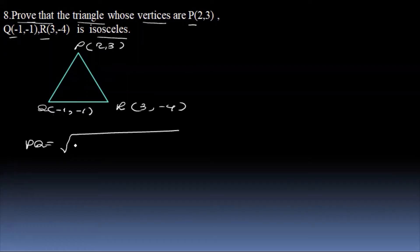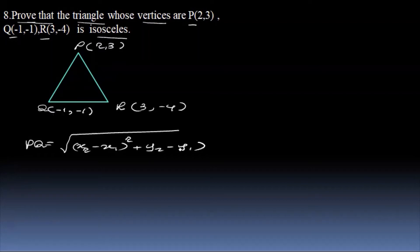The distance formula is the square root of (x2 minus x1) the whole square, plus (y2 minus y1) the whole square.